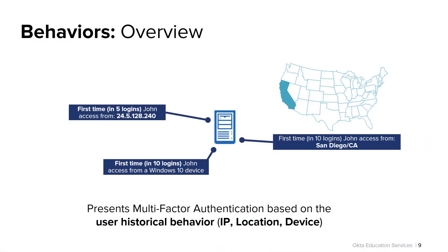By configuring behaviors within your Okta org and then leveraging those behaviors via behavior detection within an Okta sign-on policy, you can add yet another factor in determining if a particular sign-on policy should be applied to a user when attempting to authenticate. Behaviors are simply used to perform a look-back at a user's previous authentication attempts — the number of which is set by an Okta administrator — evaluating such things as the IP address, location, or the device used. When used as part of an Okta sign-on policy's behavior detection setting, if there is any change in pattern compared to that look-back, then the policy may be applied to the user depending on other rules established within the same policy.